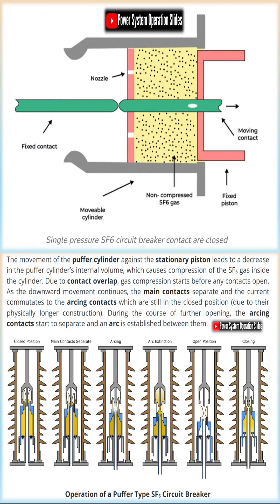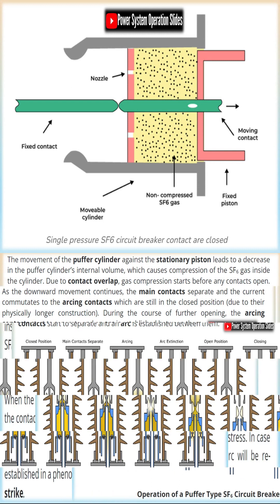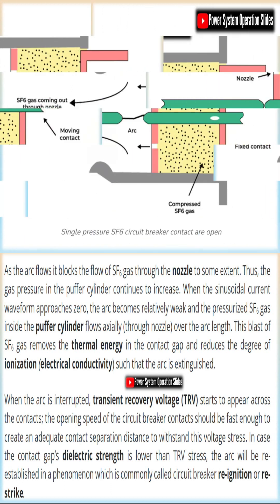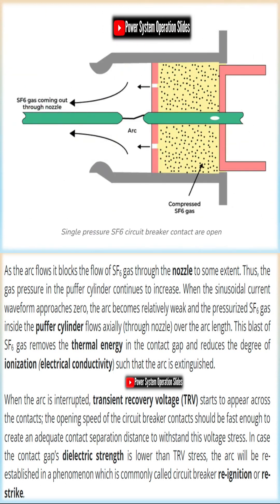Once the arc is extinguished and current reaches zero, the breaker fully opens. In a closing operation, the mechanism drives the moving contact to reconnect with the fixed contact under the protection of SF6 insulation.